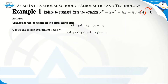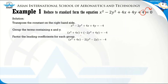The next step is to factor the leading coefficients of each group. For the first group, the coefficient of x² is 1, so we don't need to factor anything. For the second group, the coefficient of y² is negative 2, so we factor out negative 2. Our equation becomes: x² plus 4x minus 2(y² minus 2y) equals negative 4. Now we complete the square for both the x group and y group.